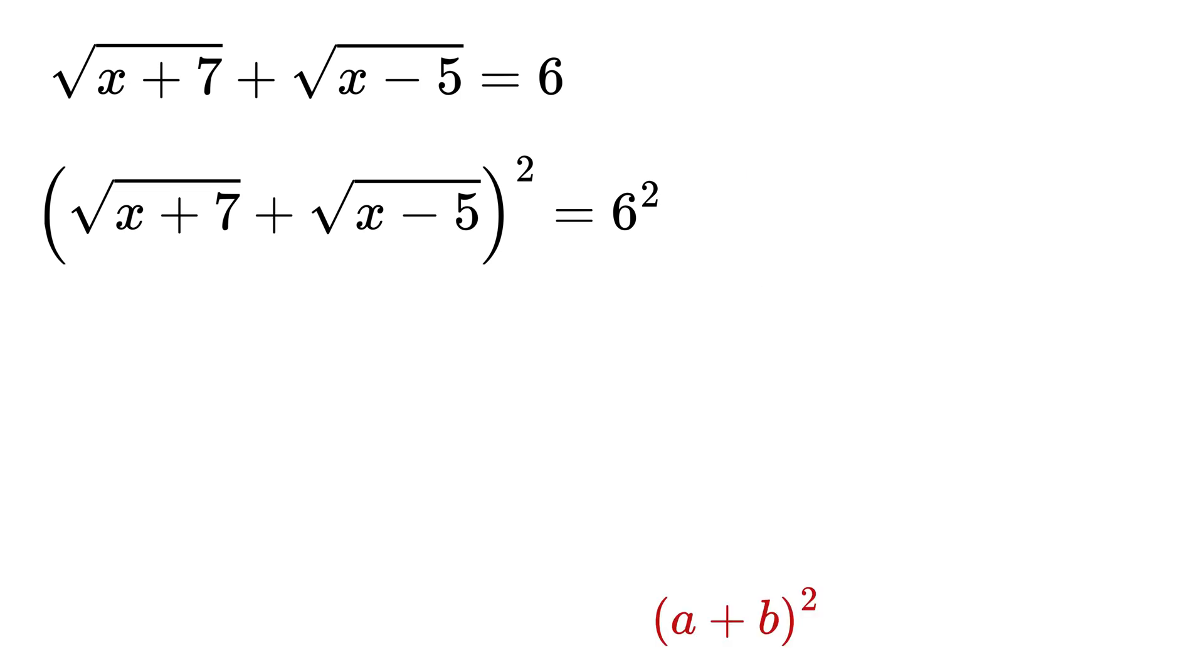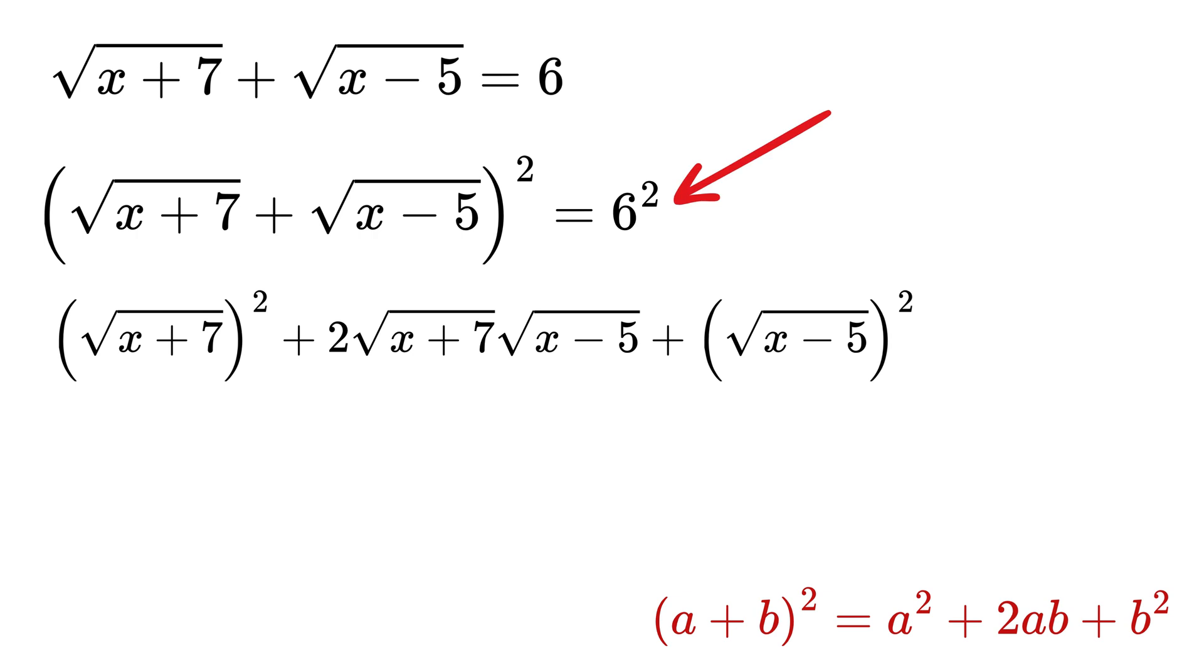Note that (a + b)² equals a² plus 2ab plus b². So, applying that here, the left side becomes (√(x+7))² plus (√(x-5))² plus 2 multiplied by √(x+7) multiplied by √(x-5). And the right side becomes 6², which is 36.